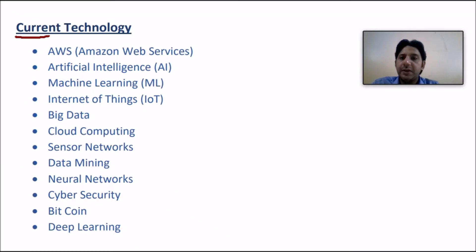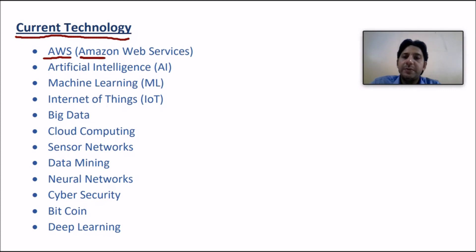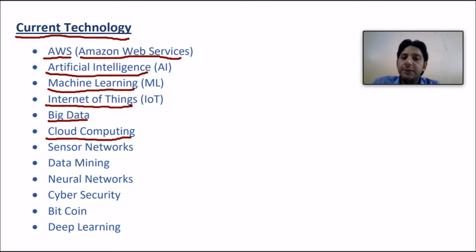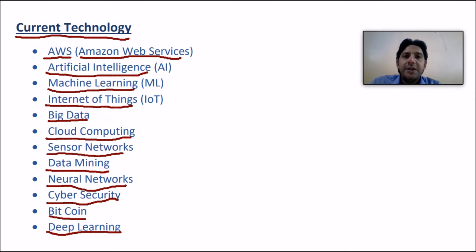You must be aware of recent technologies in the market: AWS (Amazon Web Services), Artificial Intelligence, Machine Learning, Internet of Things, Big Data, Cloud Computing, Sensor Networks, Data Mining, Neural Networks, Cyber Security, Bitcoin, and Deep Learning. You don't need to go into detail about all of them, but the company wants you to have a basic idea so that if asked about big data or cyber security, you can answer what these technologies are and how they work.